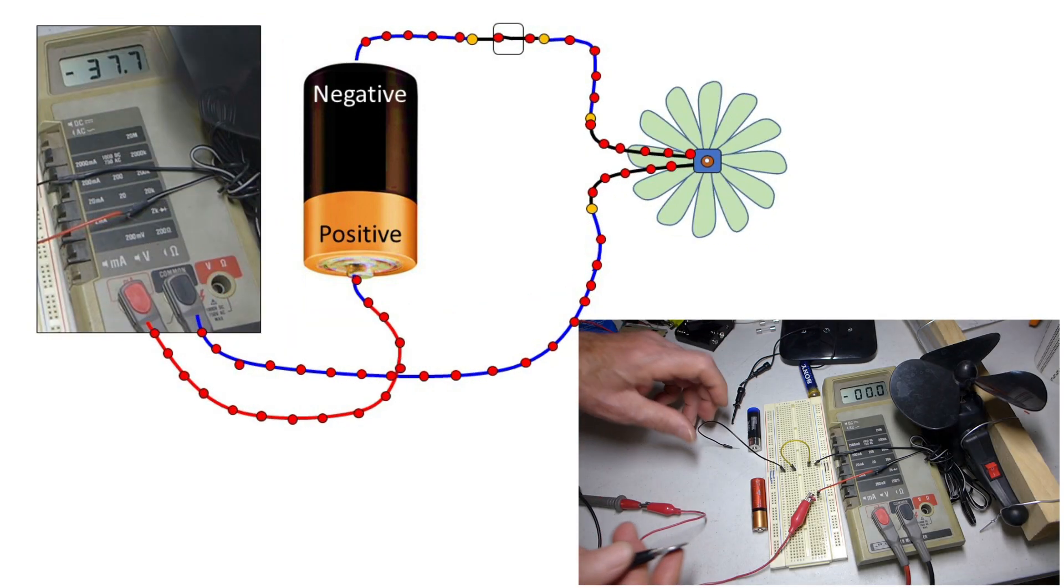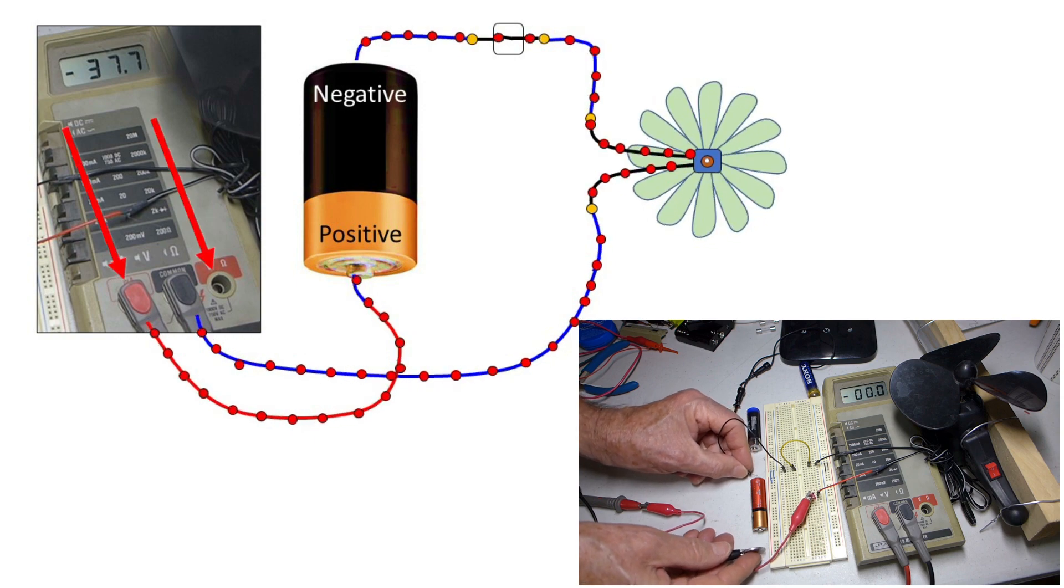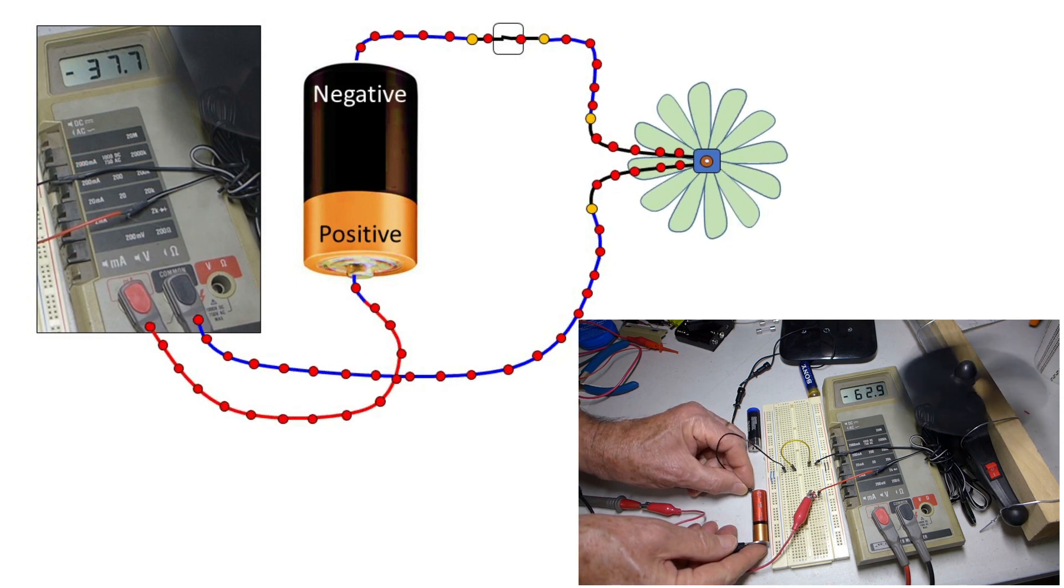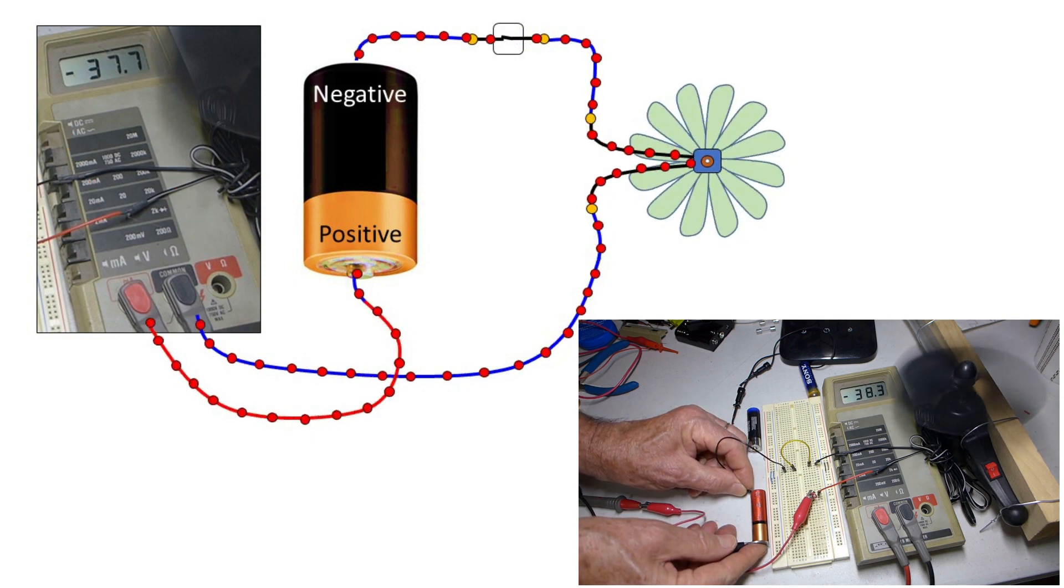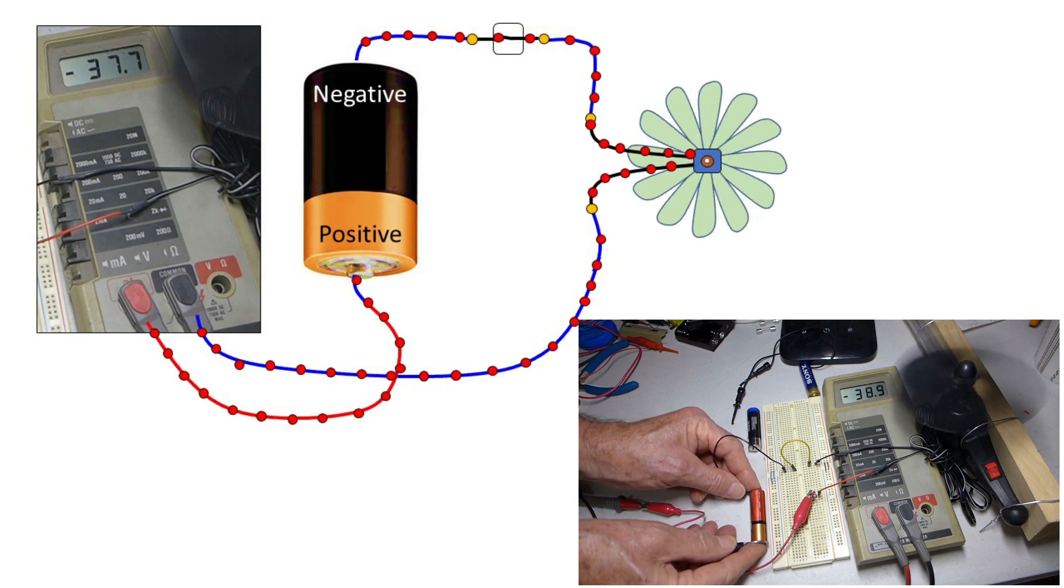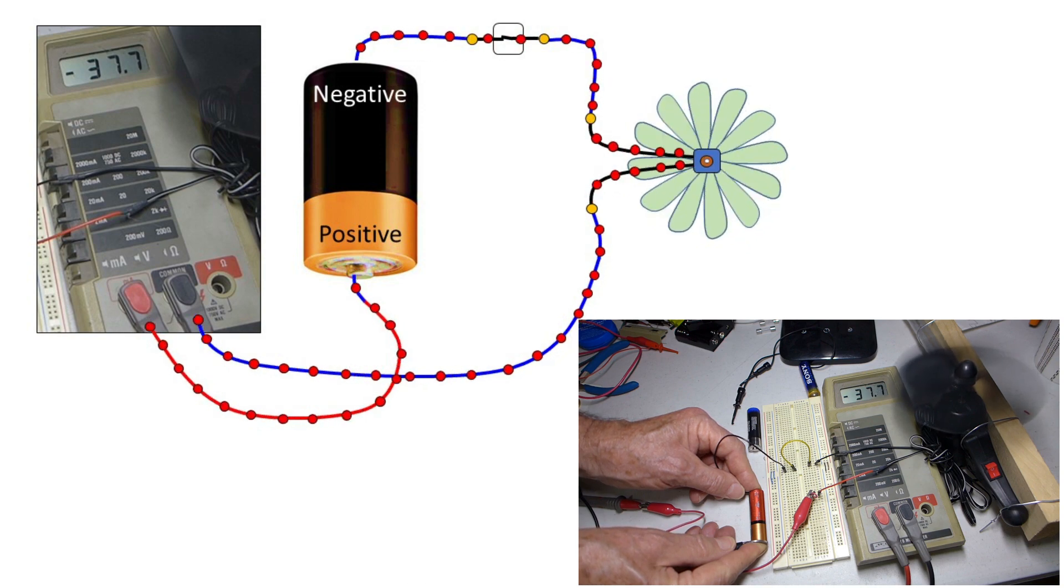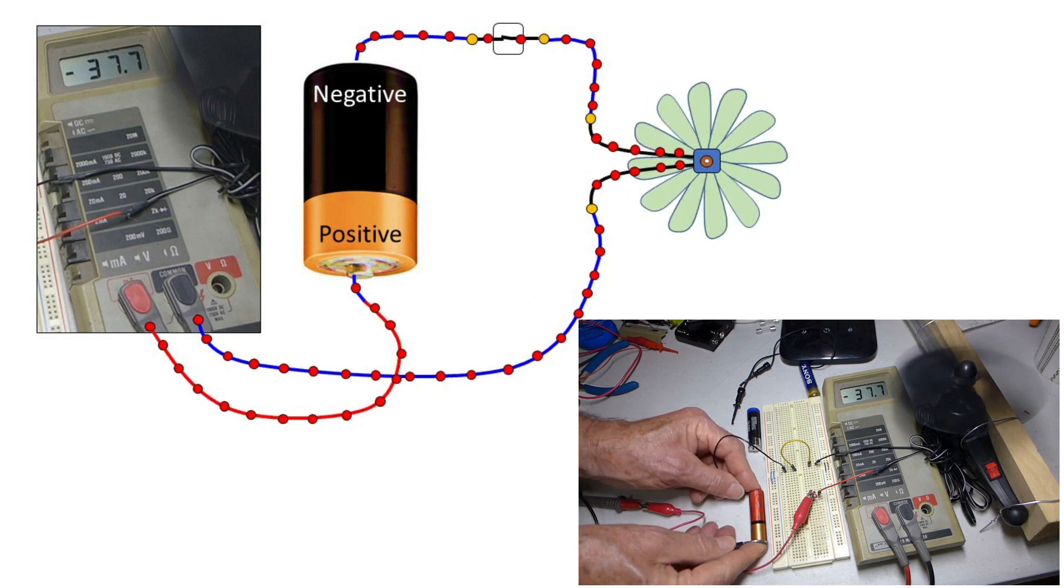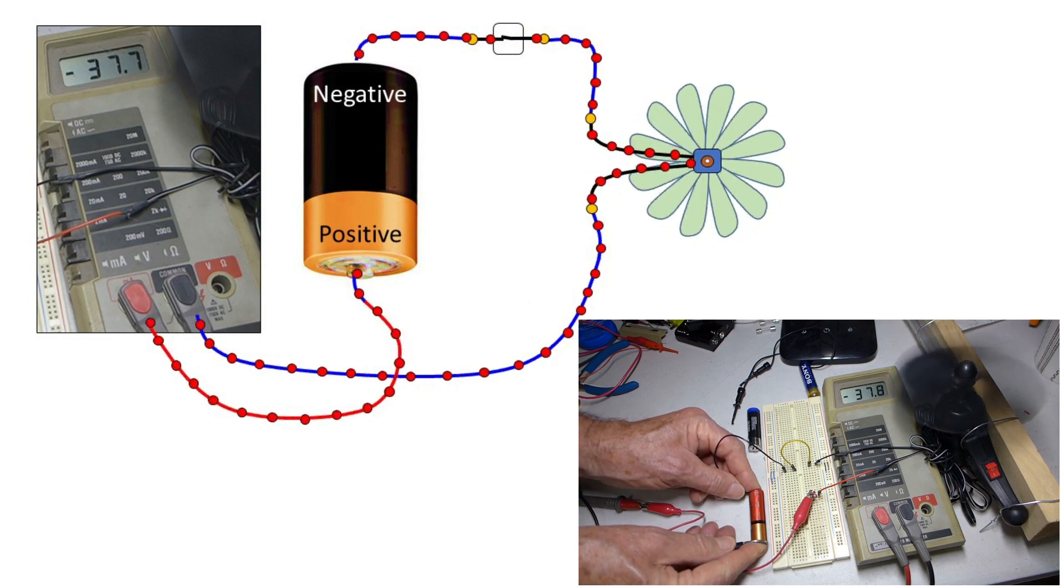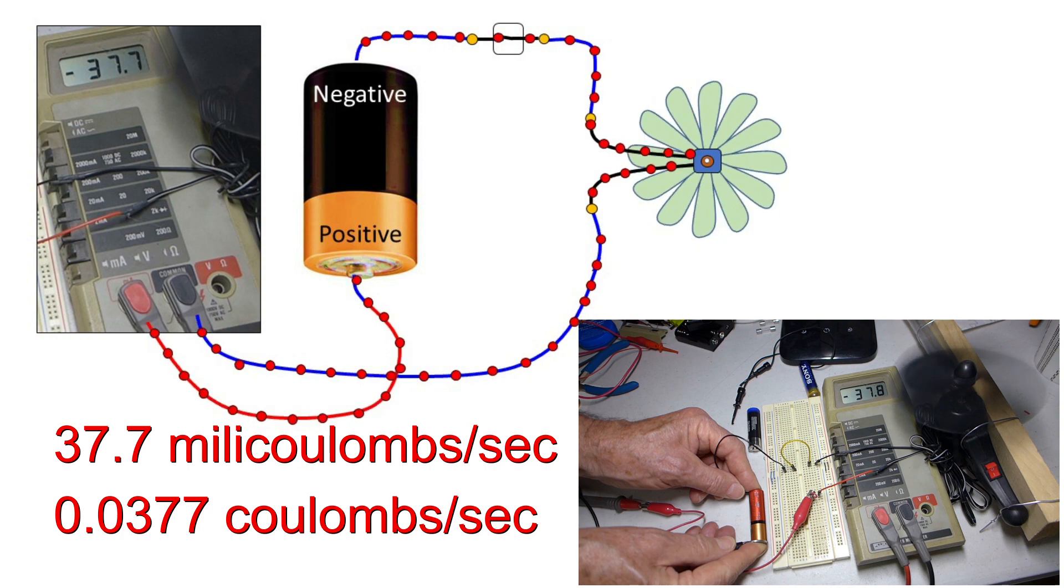This device is called a multimeter because it can measure voltage and current. I changed the way to connect it to show the current in coulombs per second. It is said to have been connected in series because all the electrons passing through the motor pass through the current meter. A current meter is an excellent conductor. The current is 37.7 millicoulombs every second.